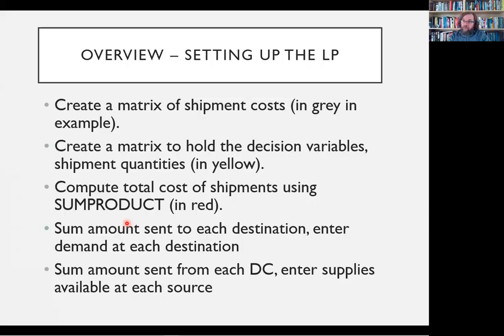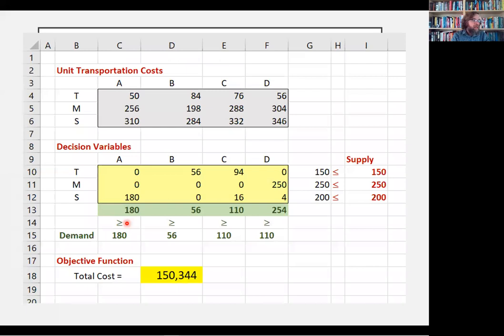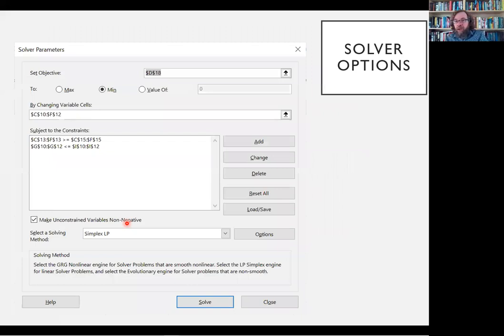So what we've set up so far is we've made this matrix of the shipment costs and a matrix of the decision variables. And we just figured out the total cost using some product. We set up a constraint to make sure each destination gets at least as much as it needs. And we set up a constraint to make sure each source is not asked to ship out more units than it has available. And so here's our solution so far. And now let's get into solver.